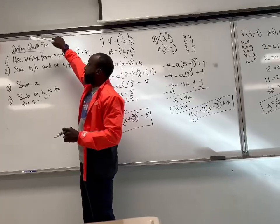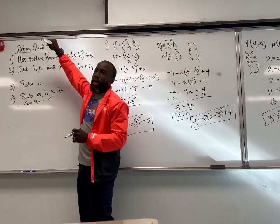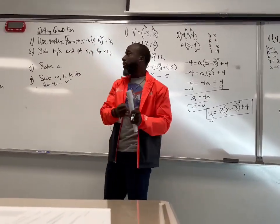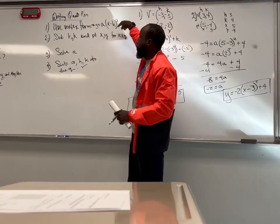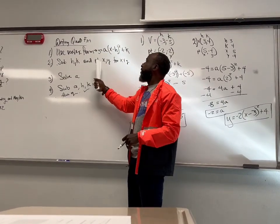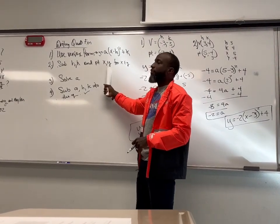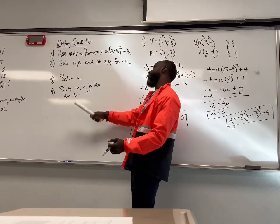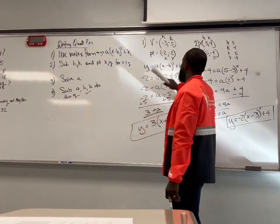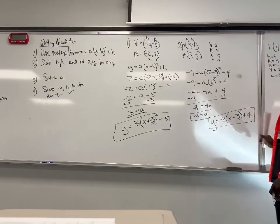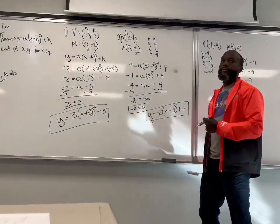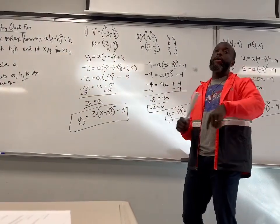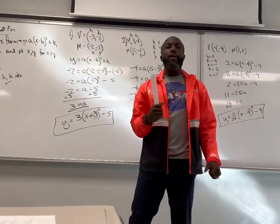So again, writing the quadratic equation when given a vertex and a point — you're going to use vertex formula. You're going to substitute h and k, and x and y for the point, and solve for a. Once you solve for a, you plug it back into the equation and you got it. That's the lesson. If you have any more questions, comment below. Until next time, this is Do The Math.